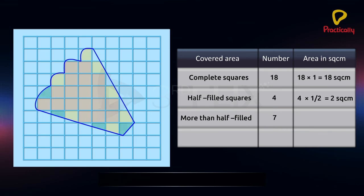Area of 7 more half filled squares equals to 7 multiplied by 1 square centimetre equals to 7 square centimetres.